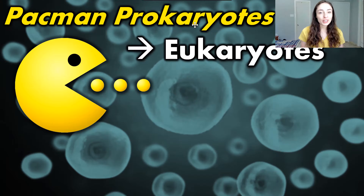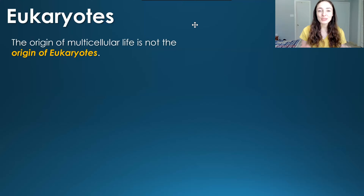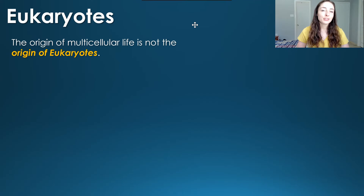We humans are biologically eukaryotes — multicellular organisms made up of eukaryotic cells rather than prokaryotic cells. But when did eukaryotic cells evolve and how? The evolution of eukaryotes started with what I'm calling Pac-Man prokaryotes. But before we talk about what that means, let me talk a little bit about what eukaryotes are and how they differ from prokaryotes.